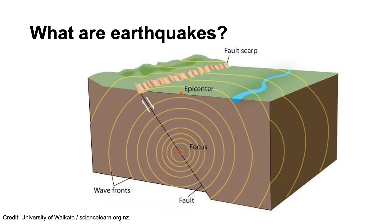When this happens, a proportion of the elastic strain energy is transferred into the surrounding rocks, moving rapidly outwards like a shockwave from the point of rupture. We call the point at which the rupture occurs the focus, and the point on the Earth's surface directly above the focus is called the epicentre.